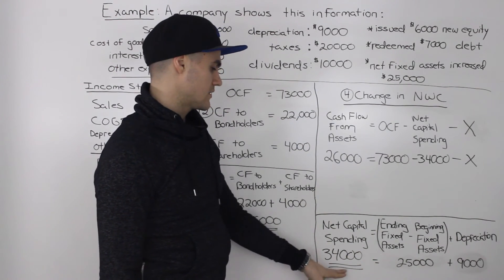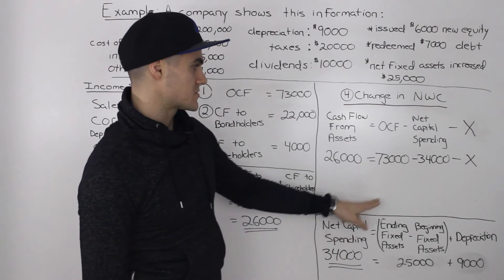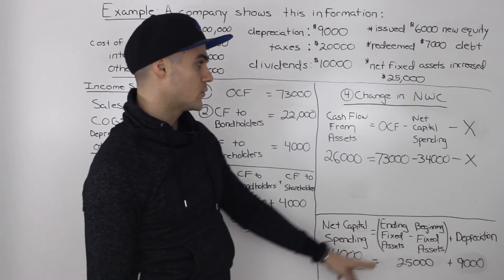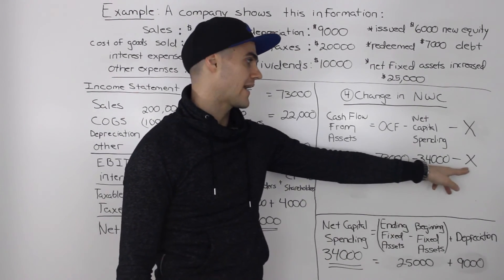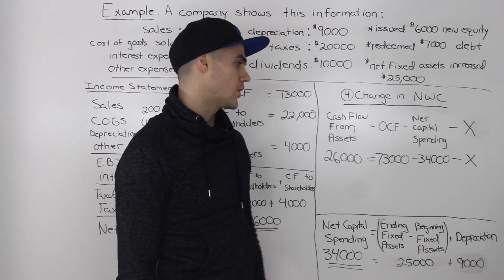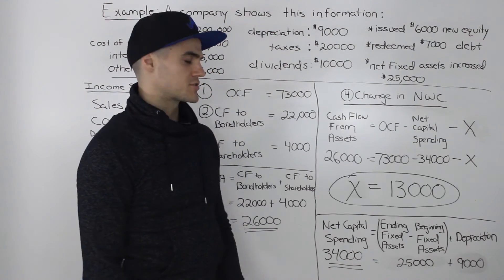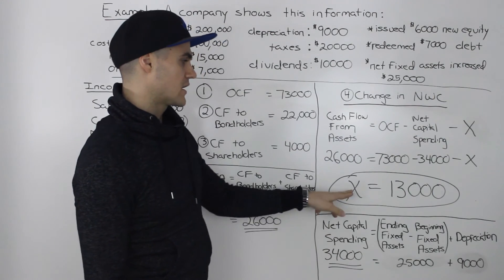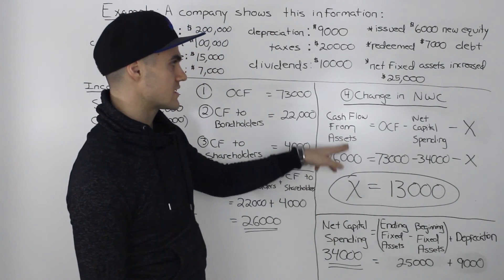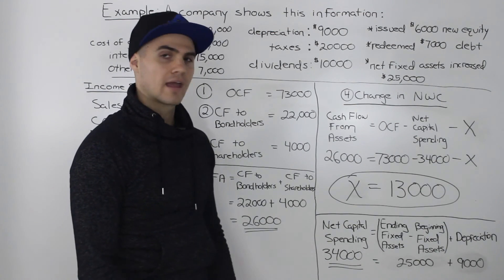Plugging $34,000 of net capital spending into the formula, x is now the only unknown. Solving for x, we get $13,000 — and that represents our change in net working capital. That is it for the entire question.